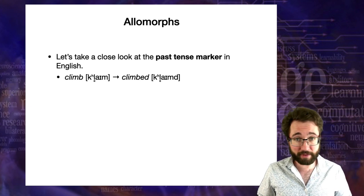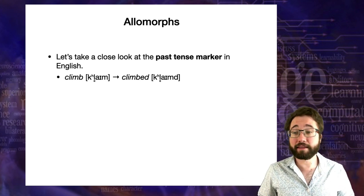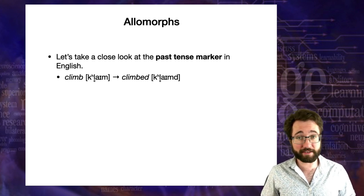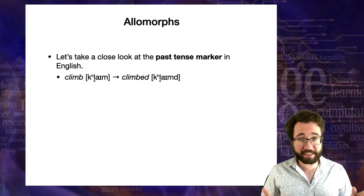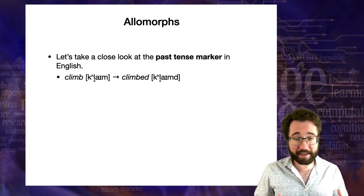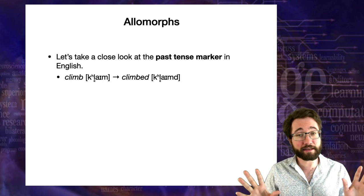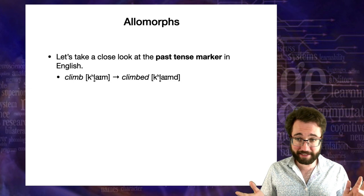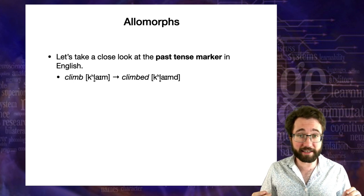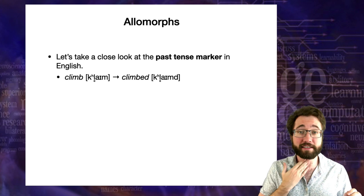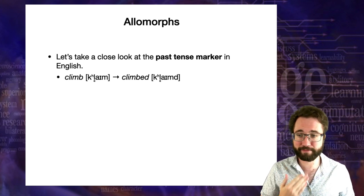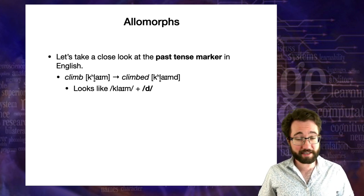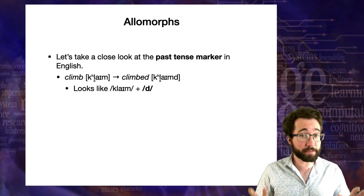The verb 'climb' in present tense becomes 'climbed' in past tense. Looking at the phonetic forms, the important thing is that the phonetic form of the past tense suffix is D — a voiced alveolar stop. So in this case, it looks like the past tense marker is the phoneme D. There are some details like the aspirated K and the unvoiced L, but the key point is that suffix is a voiced D.